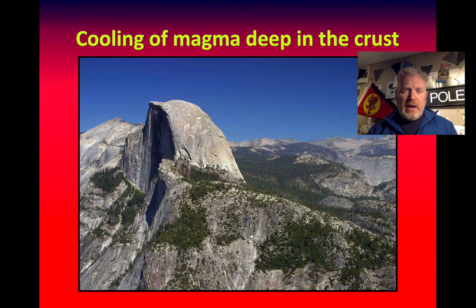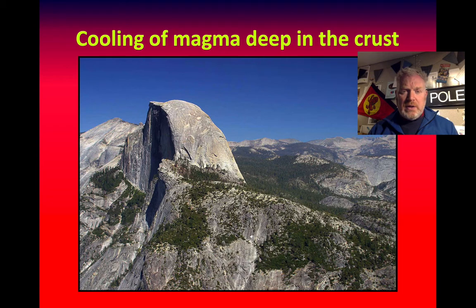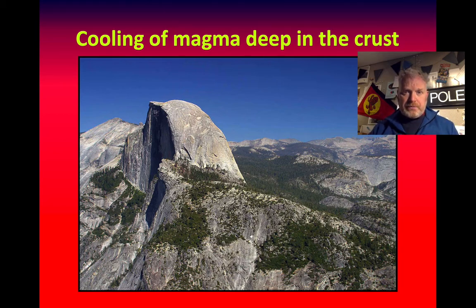This picture is a mountain called Half Dome in Yosemite National Park in California, USA. This is made of granite that cooled deep in the crust. Because it cooled deep in the crust, it was well insulated from losing heat and would have cooled very, very slowly. If you visit, you see very big crystals of different minerals making up this granite. So this would have been a gradual process.